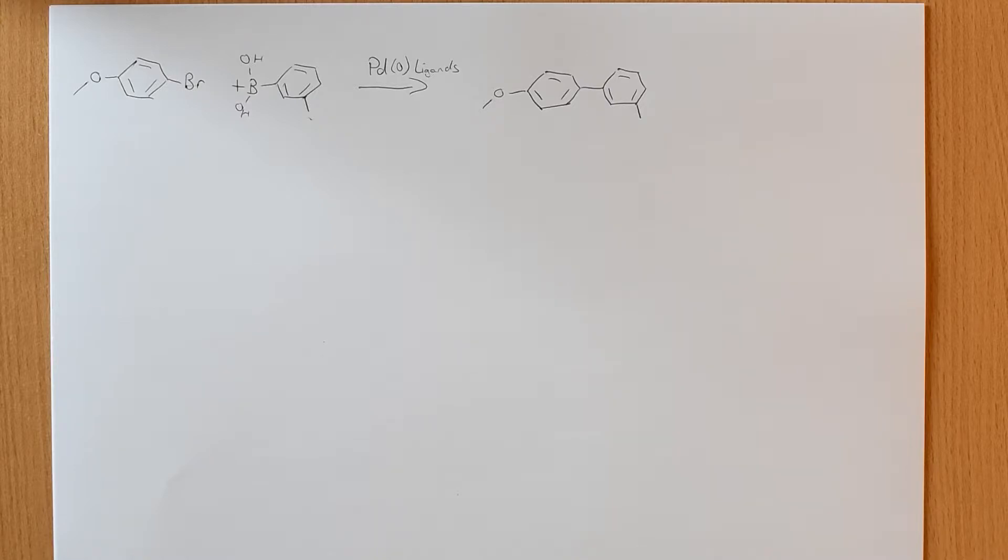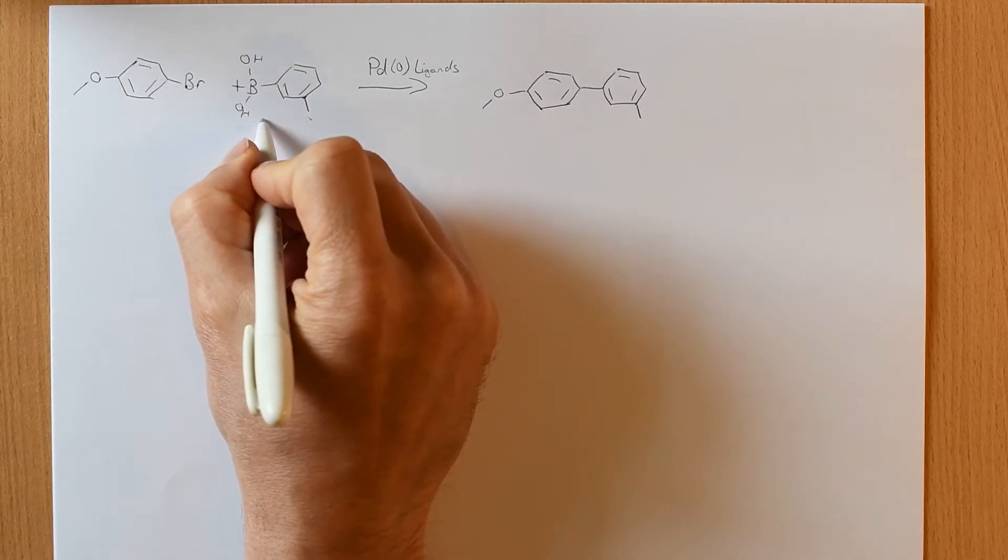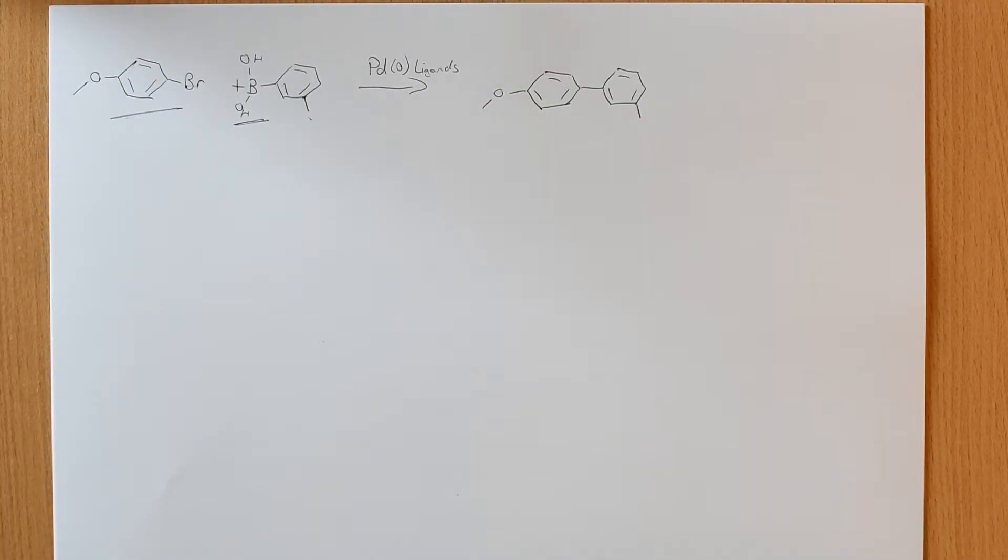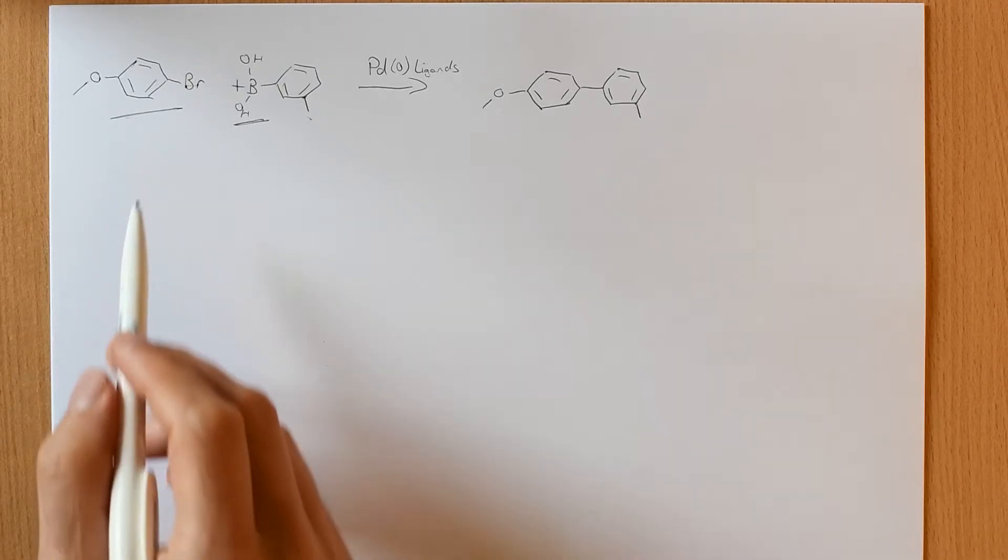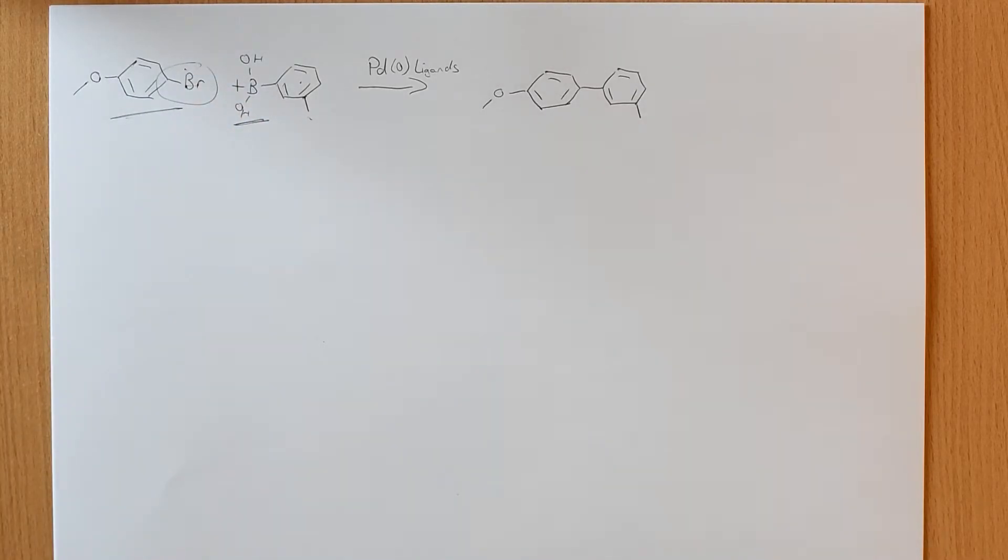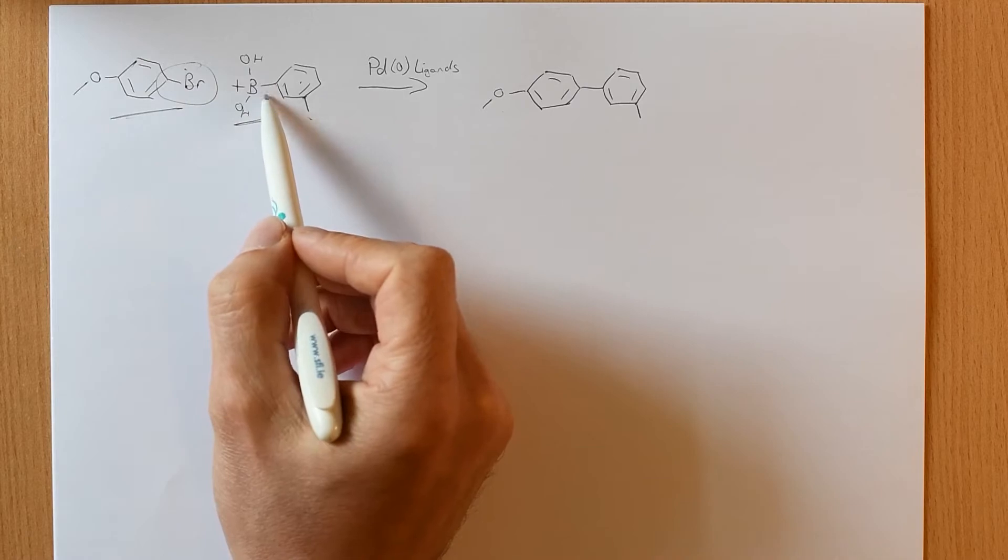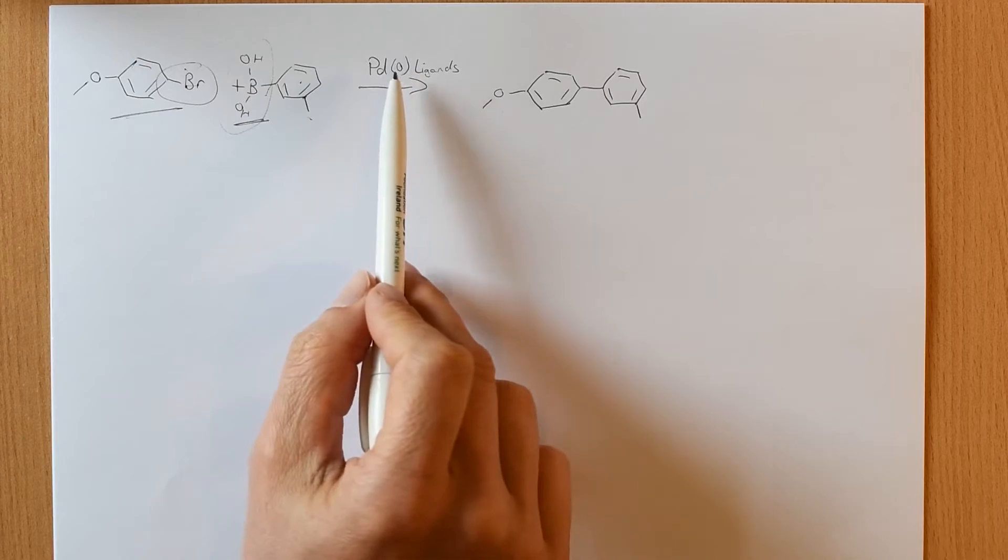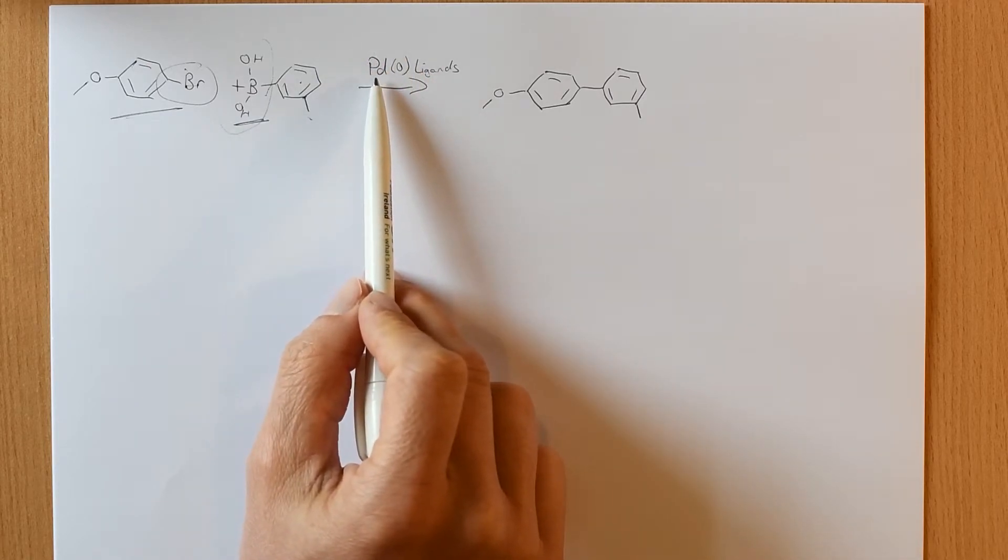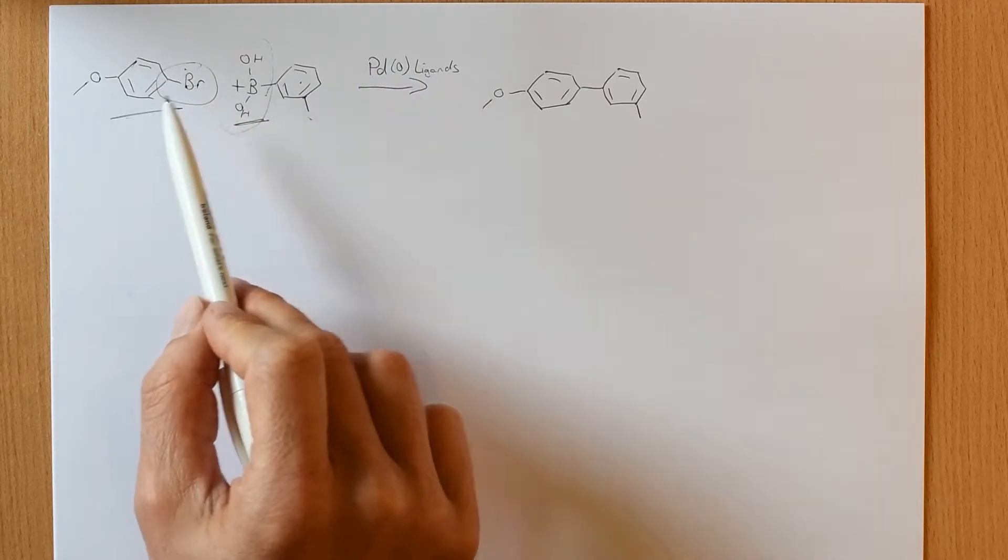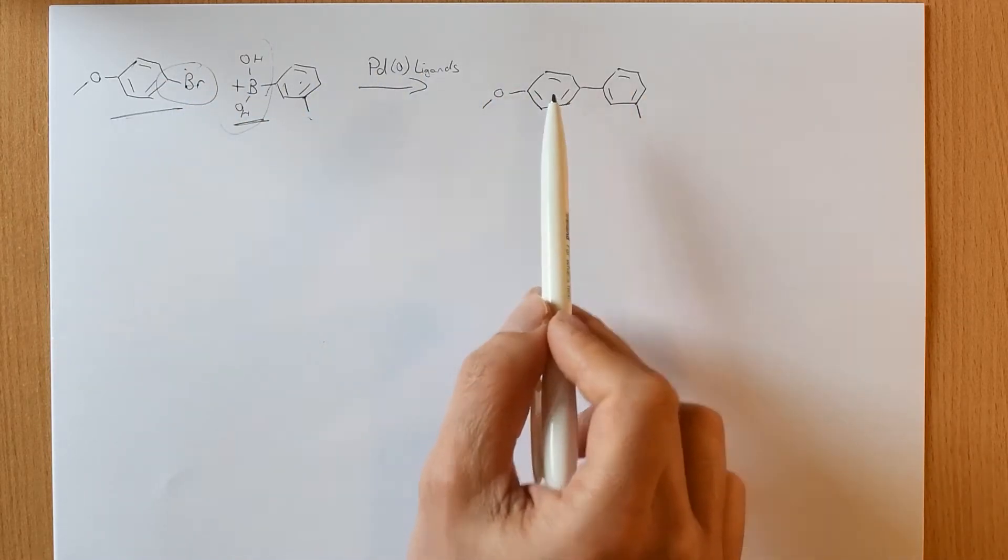We're going to have a look at the mechanism, and then we're going to think about this coupling partner here and the limits of this coupling partner. But that's the general synopsis of Palladium cross couplings. You take two coupling partners - one which is usually an aryl halide or a vinyl halide, and one of which has a metal or pseudo metal attached to a carbon. And the catalytic cycle: Palladium inserts, oxidative insertion, transmetallation, reductive elimination. And ultimately you get this here.